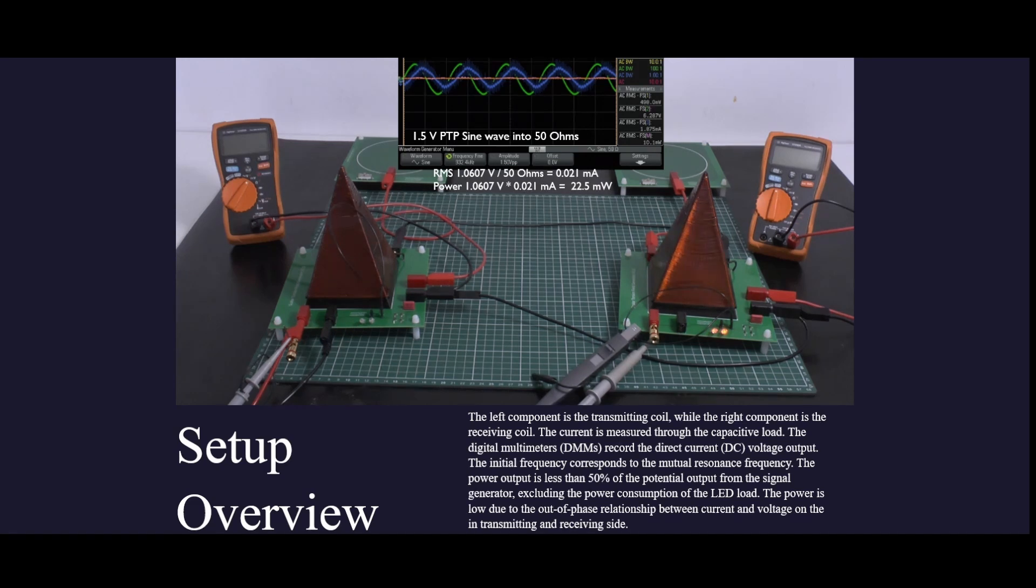The initial frequency corresponds to the mutual resonance frequency. The power output is less than 50% of the potential output from the signal generator, excluding the power consumption of the LED load. The power is low due to the out-of-phase relationship between current and voltage on the transmitting and receiving side.